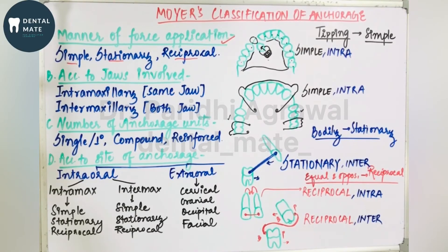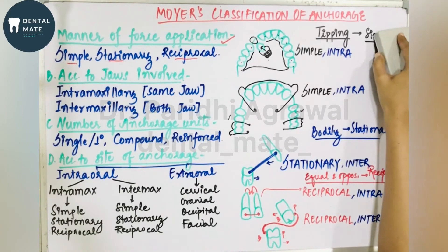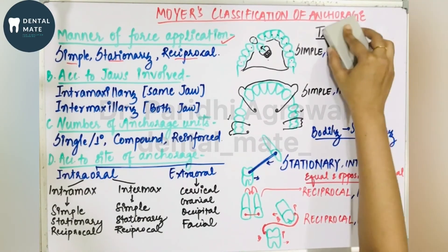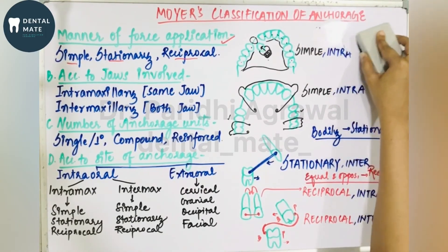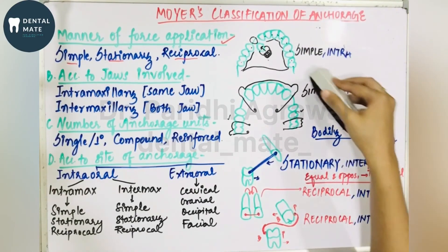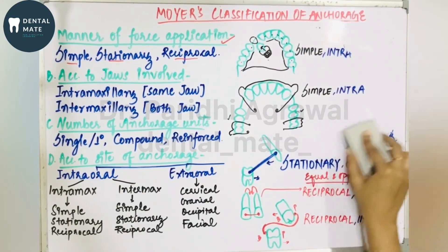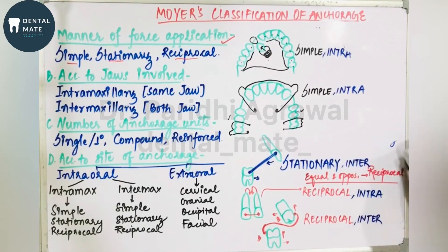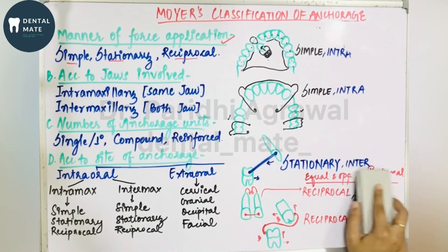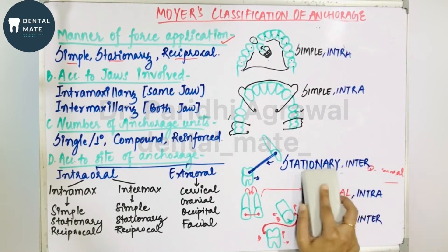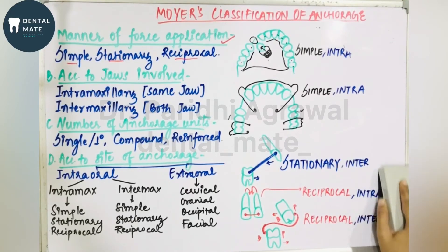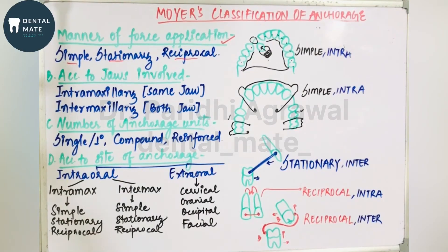It is important to remember that it is not necessary that any given situation represents only one type of anchorage. For example, the Hawley's appliance situation is both intramaxillary anchorage and simple anchorage. Whatever situation we take in anchorage planning, it could be applicable to different types of anchorage classification simultaneously.